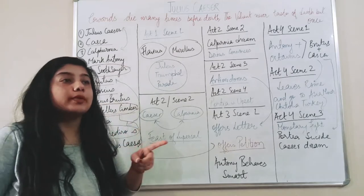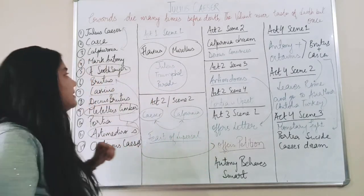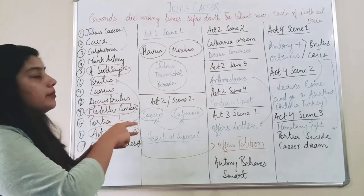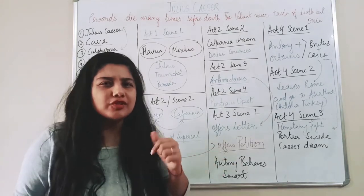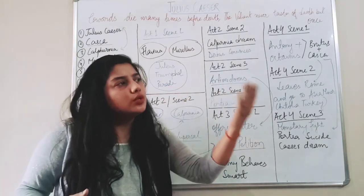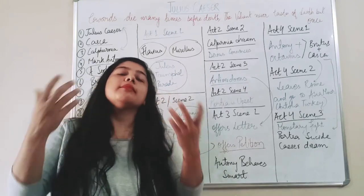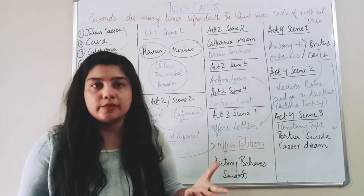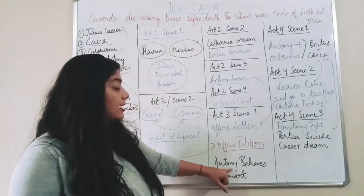Antony is the only one who is in support of Caesar. But here Antony behaves very smart. He says that 'if I do something stupid, they are going to kill me also.' So what actually does Antony? Goes to these people and he tells them that 'don't you think we should tell the crowd? So you tell the speech first, then I will tell my speech so that we can easily kill these people.'